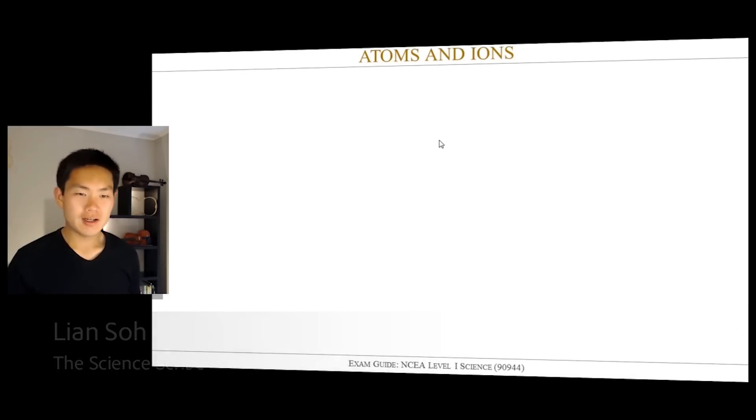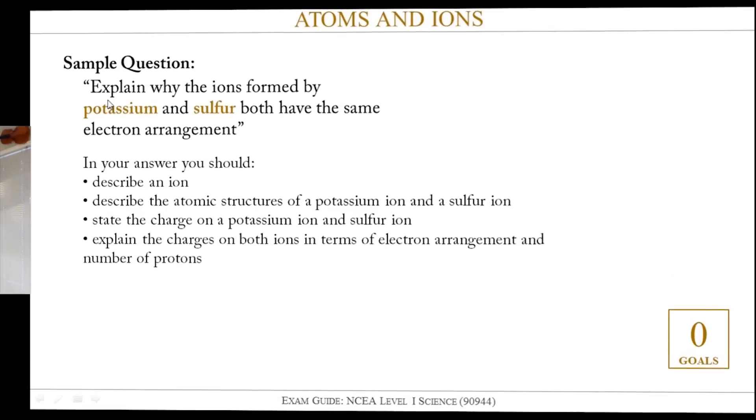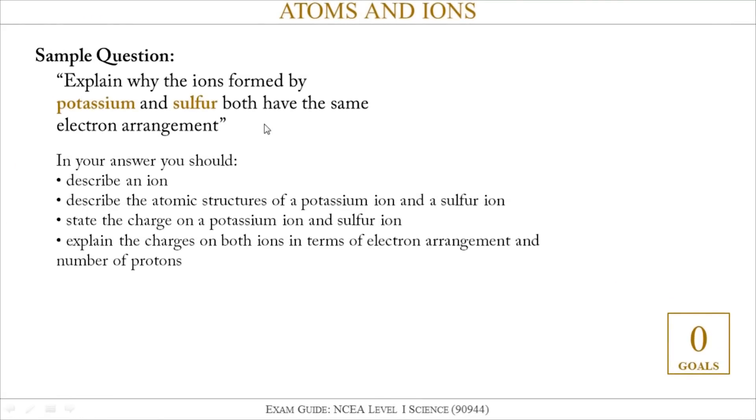In this video we're going to be looking at atoms and ions. In particular, we're going to be focusing on a particular style of exam question where you have to describe why atoms form ions and talk about their subatomic particles. Here I've provided a sample question: explain why the ions formed by potassium and sulfur both have the same electron arrangement. This typically comes with bullet points - you've got to describe what an ion is, give atomic structures, and give the charges on each of the ions. In the bottom right hand corner I've got a set number of goals and you'll see towards the end of this video what those goals are.